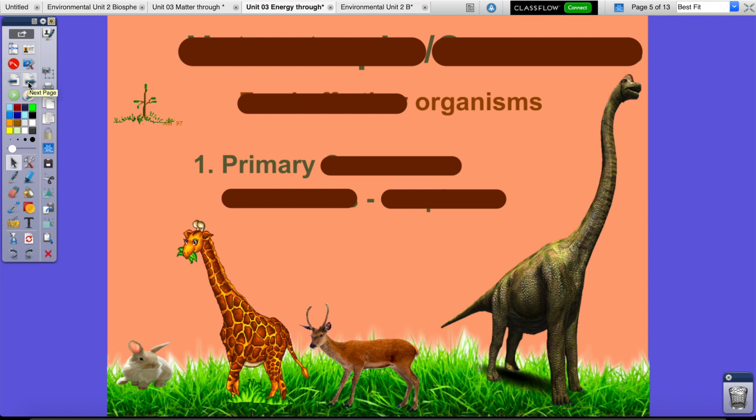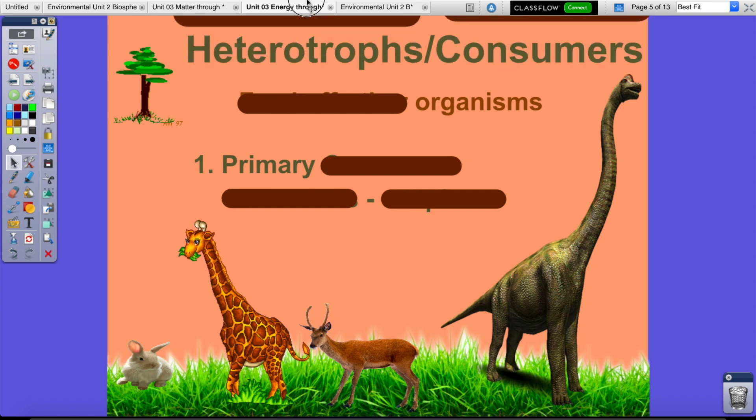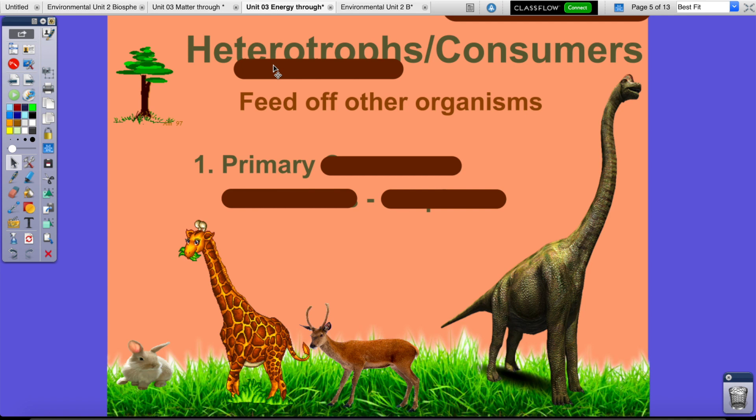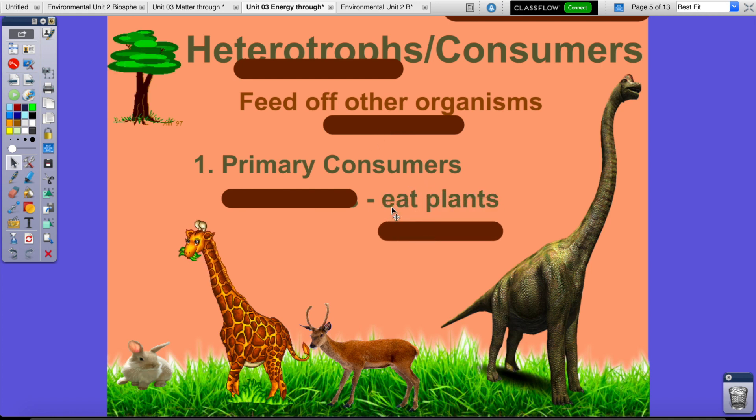All right, so once we have our producers, who's next? Consumers. What's another word for consumer? Heterotrophs. Heterotrophs slash consumers. What do they do? They eat the food. Good. They eat. They feed off other organisms. They cannot make their own food. They use the sun's energy indirectly because they obtain their energy from other organisms. When you are a primary consumer, what do you eat? Plants. What do we call plant eaters? Herbivores. So number one, primary consumers, they're called herbivores, and they eat plants.